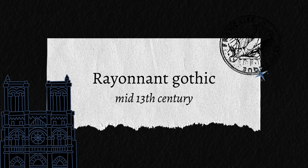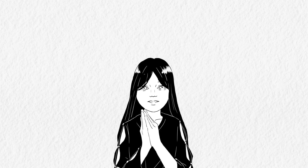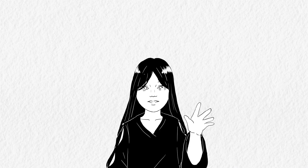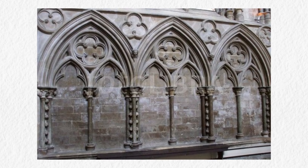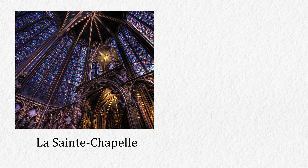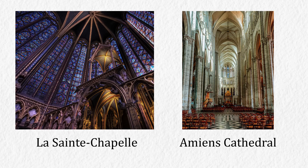Next, the third one: Rayonnant Gothic, or Radiant Gothic, started around the mid to late 13th century. After managing height in the previous periods, they then focused more on light — thus the name Rayonnant. The key features are the giant rose windows and more usage of stained glass. Apart from the windows, blind tracery or tracery on walls started to be more common in this era. La Sainte-Chapelle is an excellent example of this period. Amiens Cathedral from the Classic period could also be counted as Rayonnant.